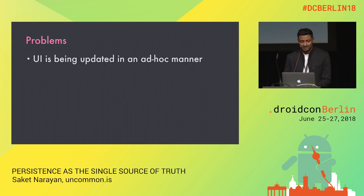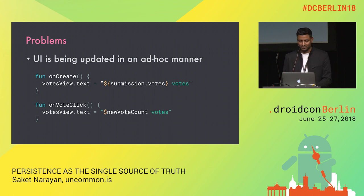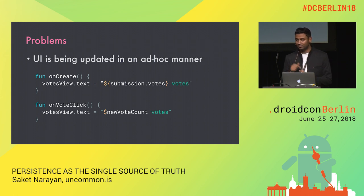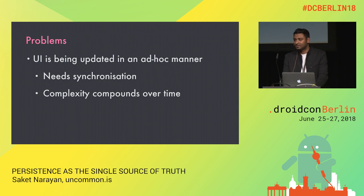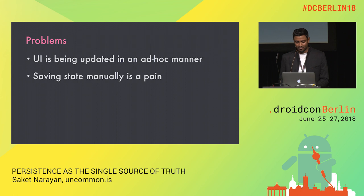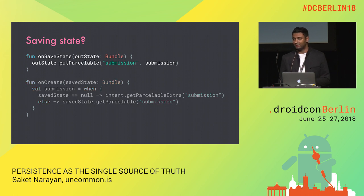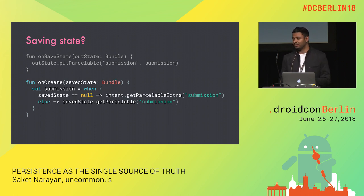The most obvious problem here is that the UI is being driven from multiple sources of truth — this is not good. First, we update the UI from onCreate from values received from the caller, and then we update the UI again when a vote button is clicked. When the UI is driven from multiple sources of information, we need to somehow synchronise these calls to avoid staleness, and this becomes very complex. The second problem is that we are also forced to save state manually — every time the screen is destroyed, we have to save the state, and when it starts again, we have to check both the restored data and the data from the caller and decide which to show.